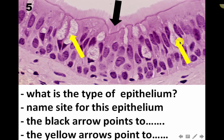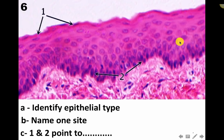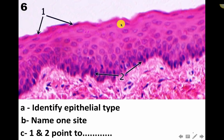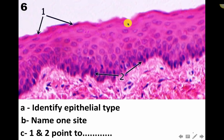Here we see many more layers of nuclei - one, two, three, four, five, six, seven, eight - so this is stratified epithelium. Look at the top layer: if the top layer has flat squamous cells, then this is stratified squamous epithelium.